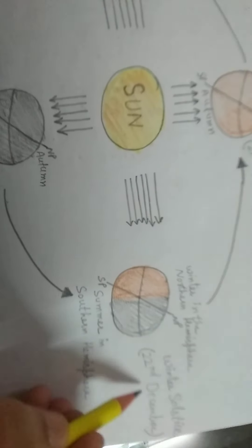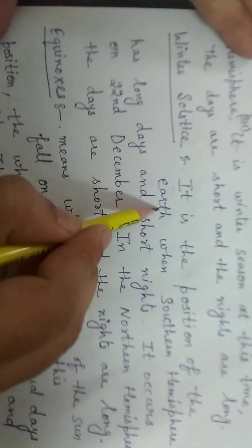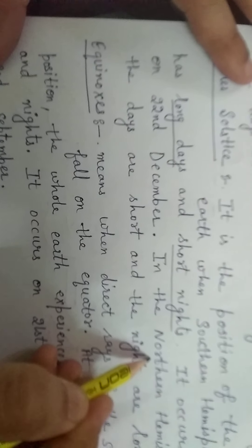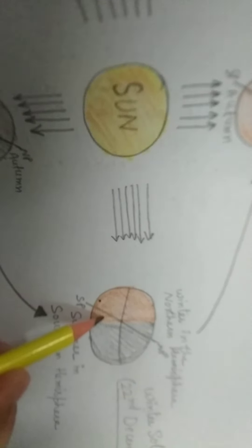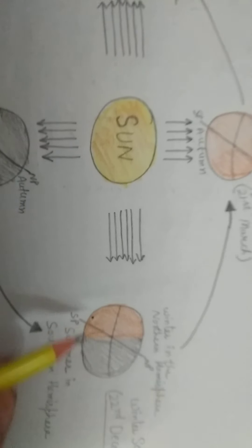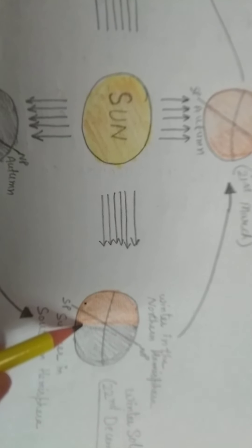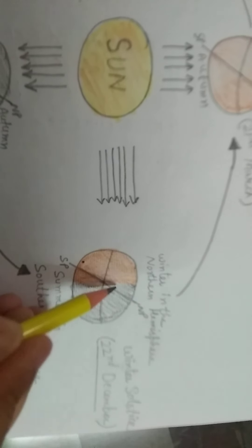On the other side, 22nd December represents winter solstice. Winter solstice means the position of the earth when the southern hemisphere has long days and short nights. In the northern hemisphere, the days are short and nights are long.